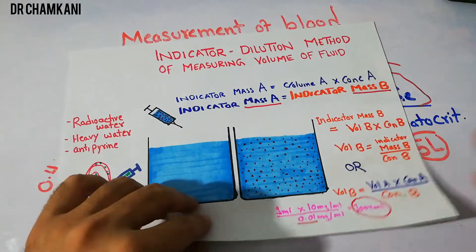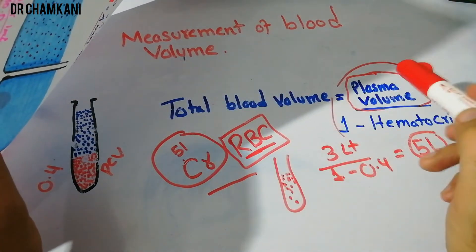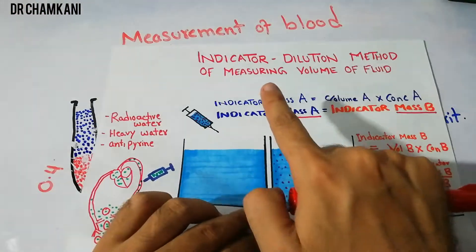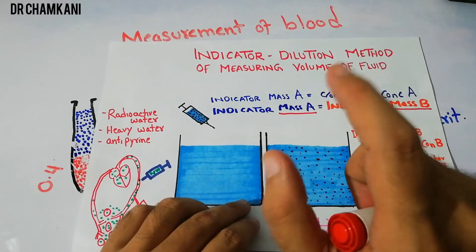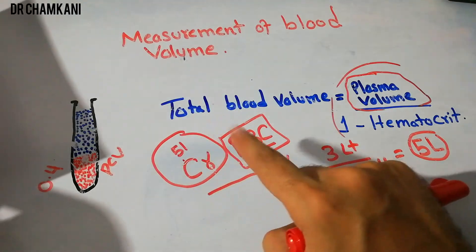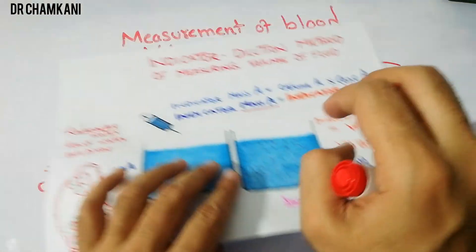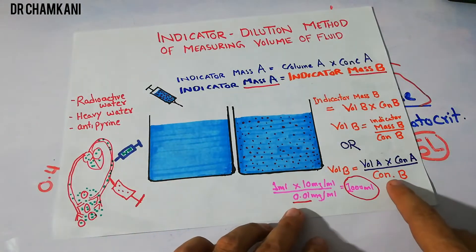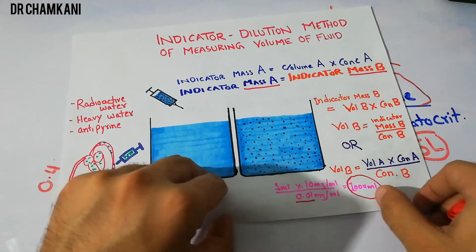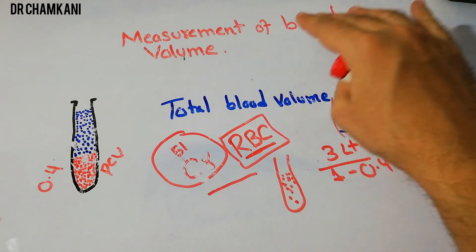To summarize, we can calculate blood volume directly using the plasma volume divided by (1 minus hematocrit) equation. Hematocrit is determined in the lab, and plasma volume is determined using the indicator dilution method with special indicators like radioactive iodine-labeled albumin. Alternatively, radioactive chromium-labeled red blood cells can be injected, allowed to circulate, and their concentration measured to determine blood volume using the same indicator dilution equation. These are two easy methods to determine blood volume.